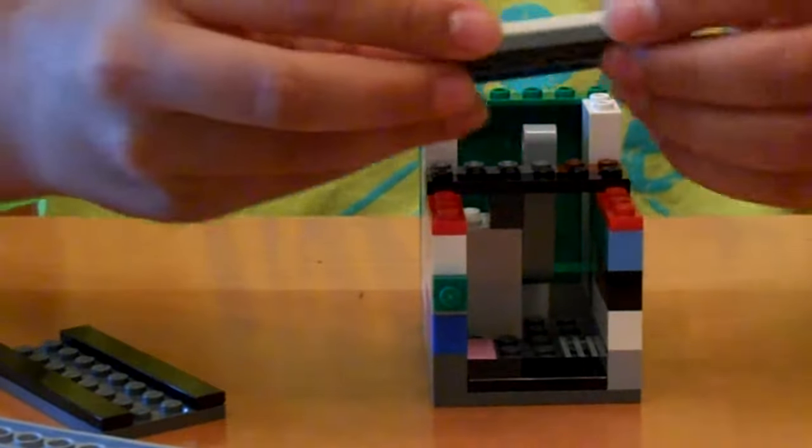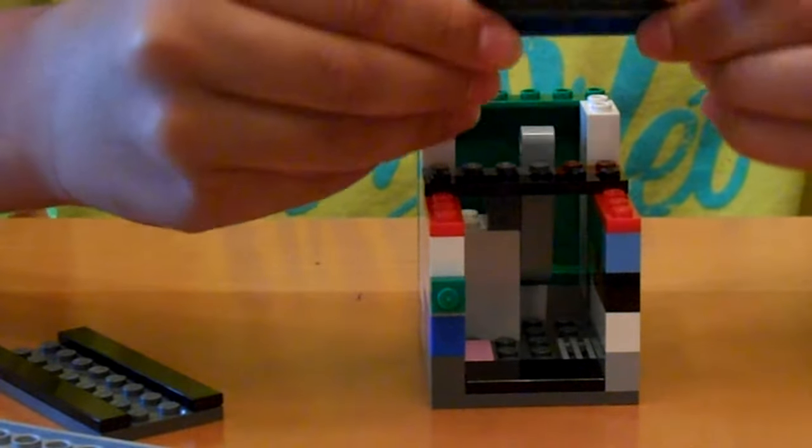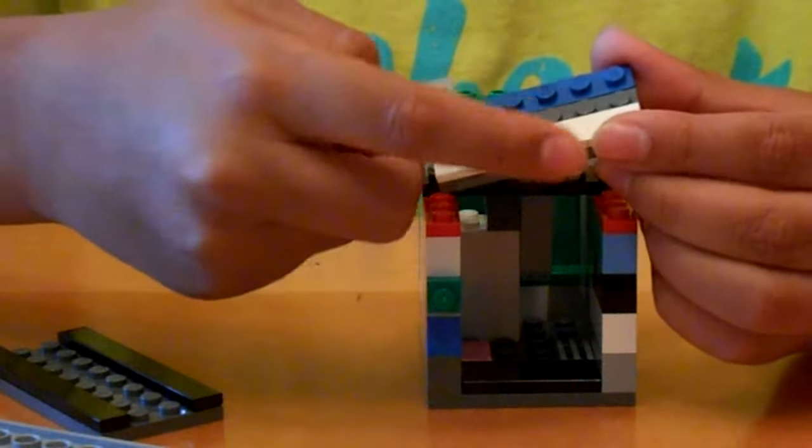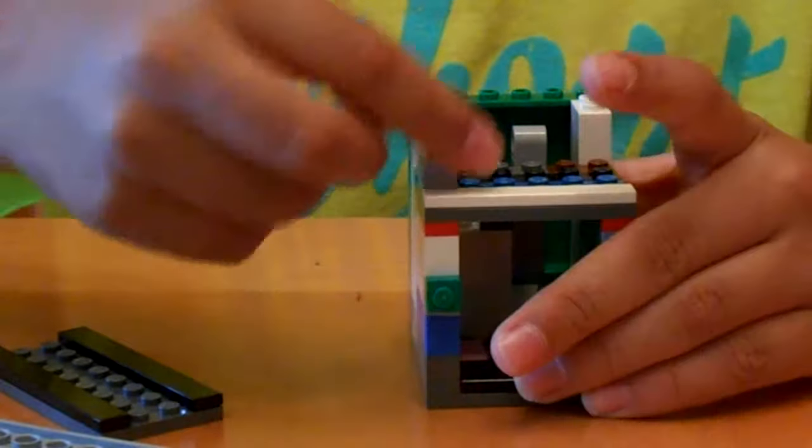And then you want to take a 2x6 and a 2x1 and attach them together with a 1x2 and a 1x6 flat. And you want to place that right on the right there. So now you've got the enclosure.